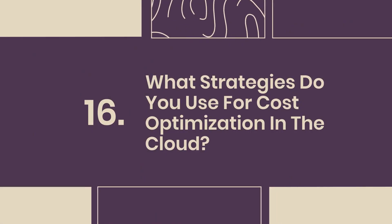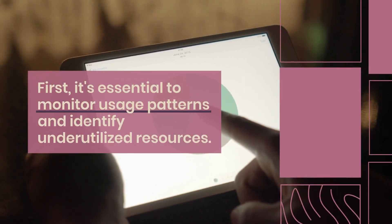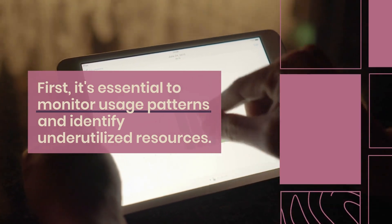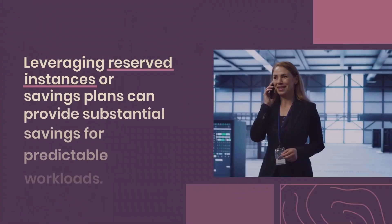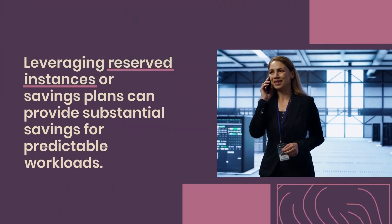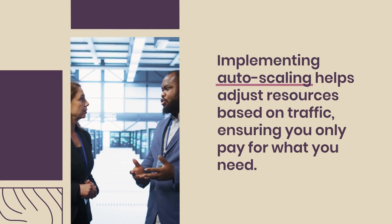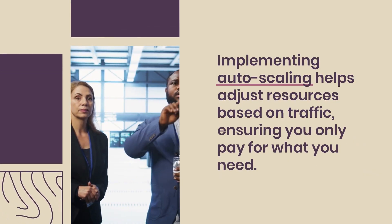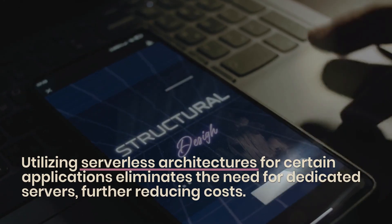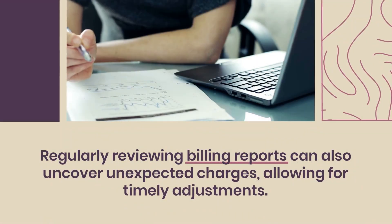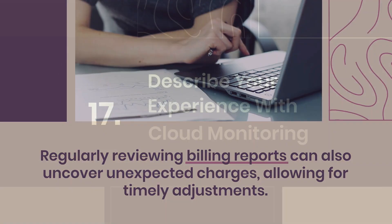16. What strategies do you use for cost optimization in the cloud? Cost optimization involves several strategies. First, monitor usage patterns and identify underutilized resources. Right-sizing instances based on actual demand can significantly reduce costs. Leveraging reserved instances or savings plans can provide substantial savings for predictable workloads. Implementing auto-scaling helps adjust resources based on traffic, ensuring you only pay for what you need. Utilizing serverless architectures for certain applications eliminates the need for dedicated servers, further reducing costs. Regularly reviewing billing reports can also uncover unexpected charges, allowing for timely adjustments.